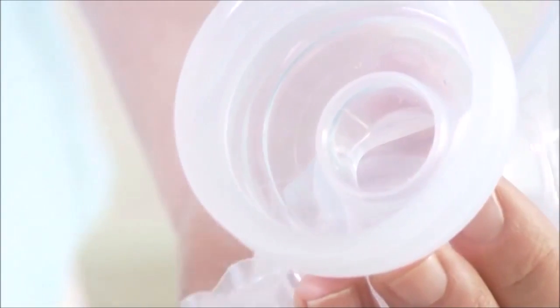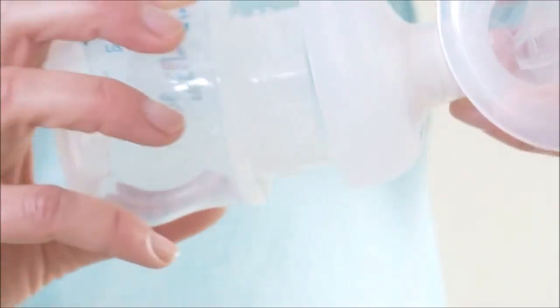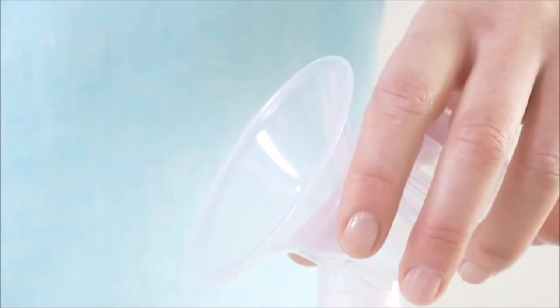Insert the white valve into the pump body from underneath and push it in as far as possible. Screw the pump body onto the Philips Avent's natural bottle until it is securely fixed.